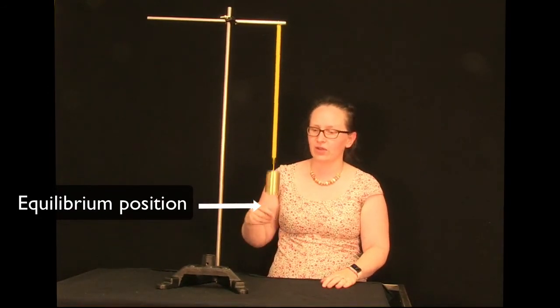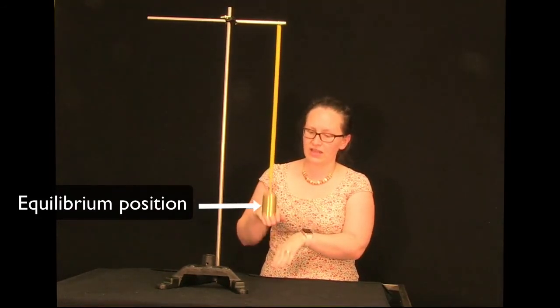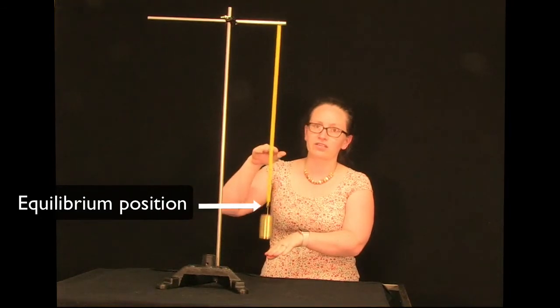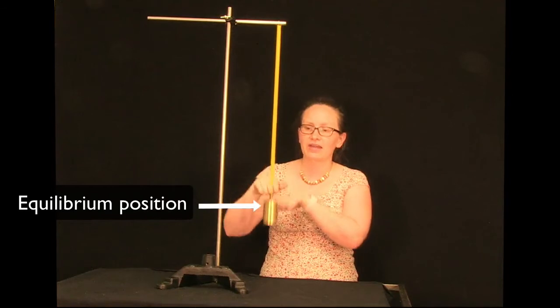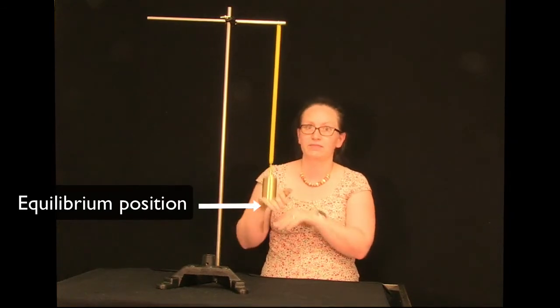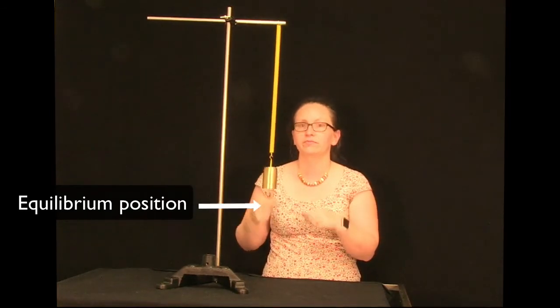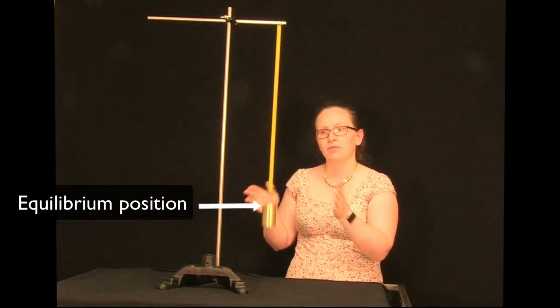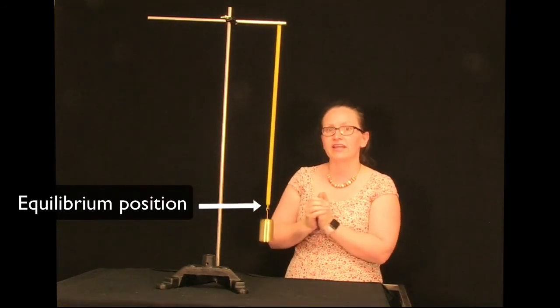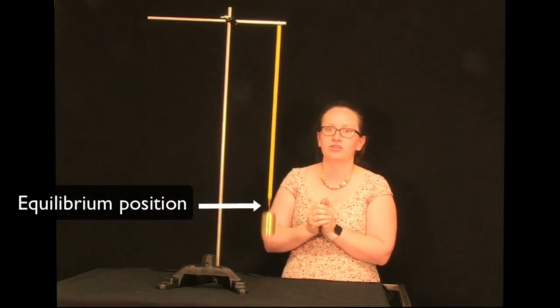So as the spring goes, it experiences the largest forces furthest from its equilibrium position. And those forces are back towards the equilibrium position and proportional to the distance from the equilibrium position. So as a result, when this mass oscillates, it undergoes simple harmonic motion.